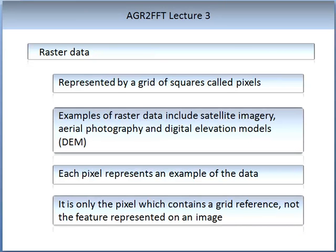Raster data is represented by a grid of squares called pixels. Examples of raster data include satellite imagery, aerial photography, and digital elevation models, or DEM for short. Each pixel represents an example of the data — for example, a pixel within a DEM would contain the elevation.